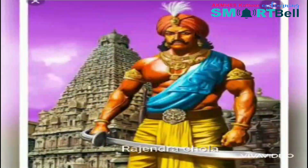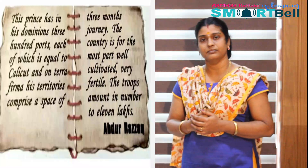The Chola dynasty became powerful by the 9th century CE. Raja Raja Chola and Rajendra Chola were the major Chola rulers. The Cholas had a powerful navy. The rule of the Chola kings spread to Sri Lanka, Malaysia, and the Indonesian islands. Next, we are going to discuss the Vijayanagara kingdom.